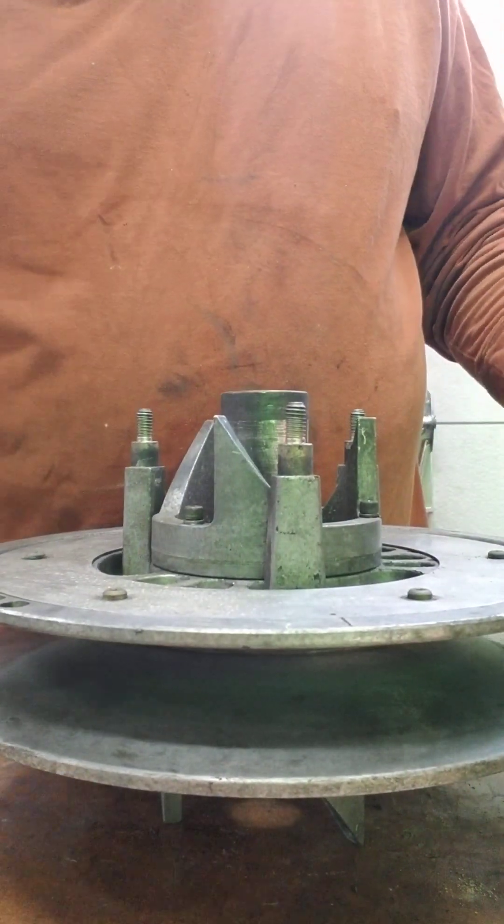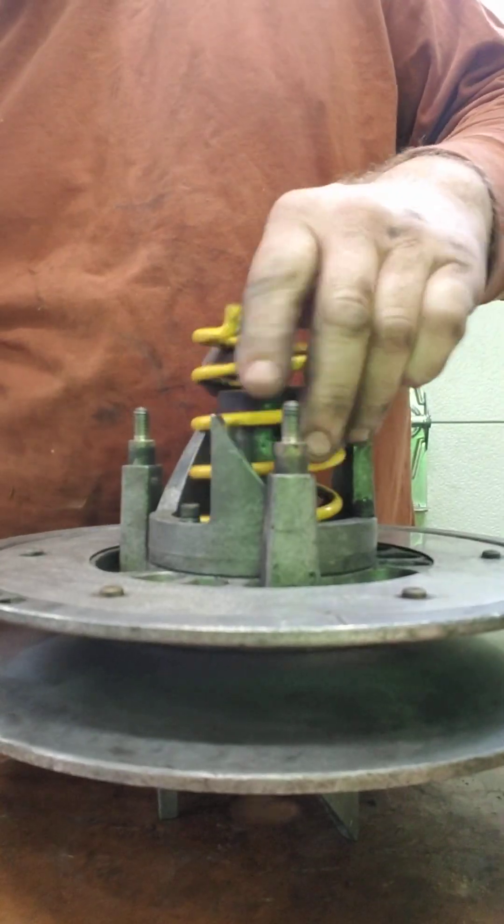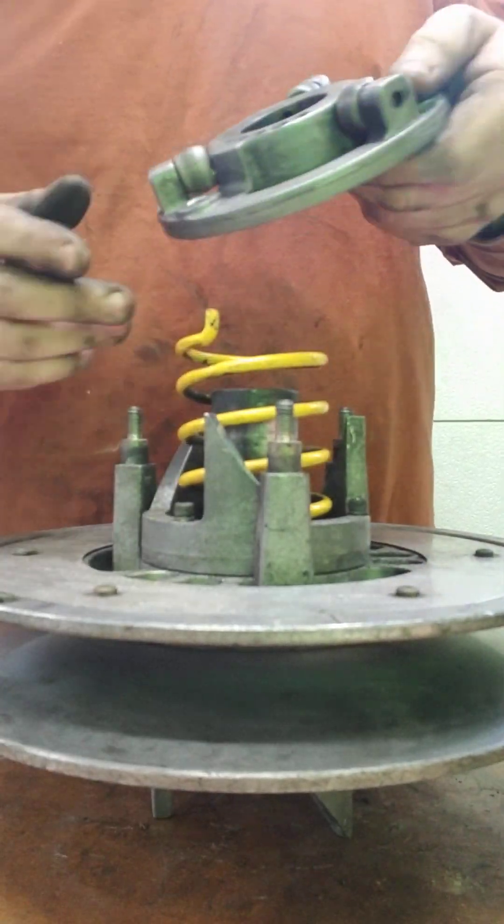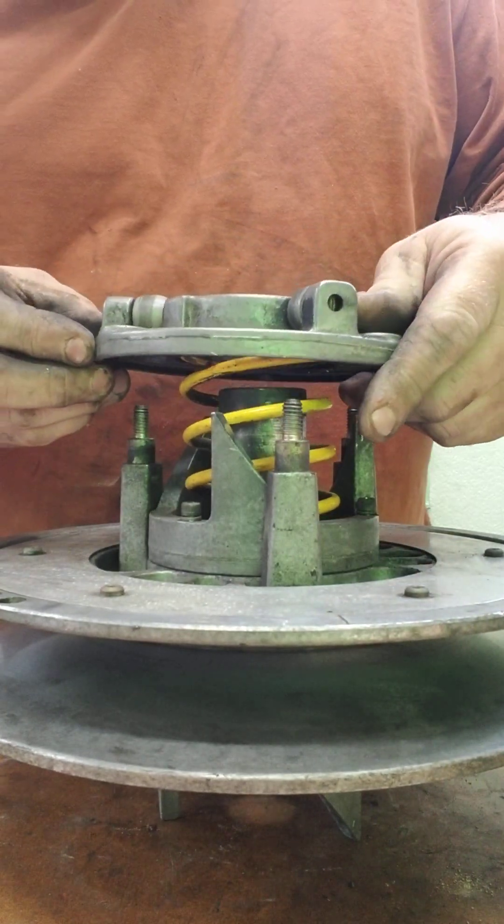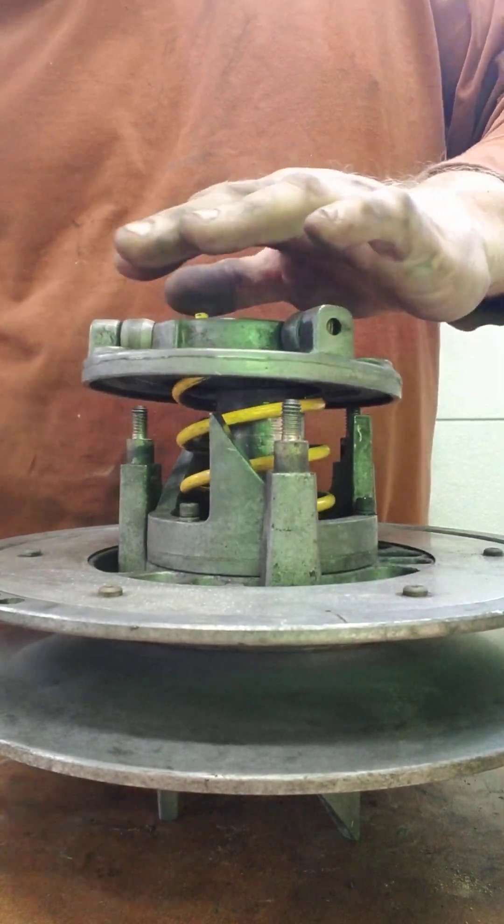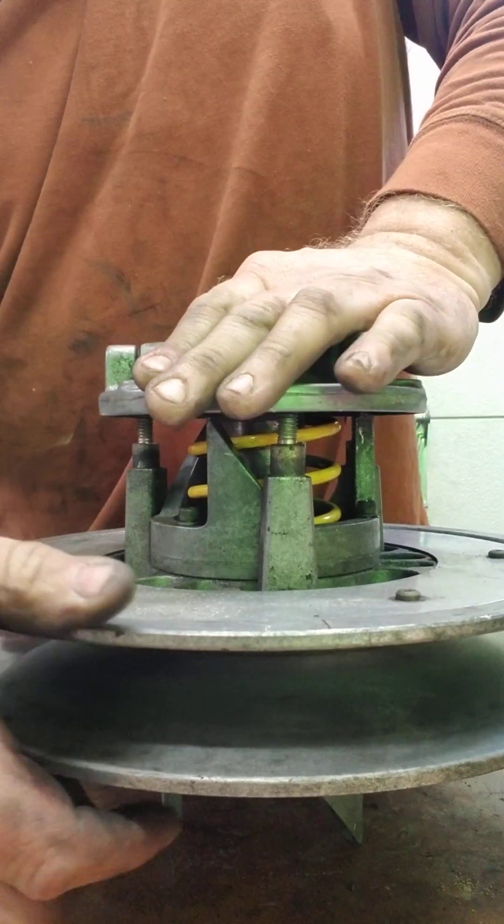And you put your clutch cover, your clutch spring back in there. Normally most stock settings is a center hole, so you put it in the center hole, then you rotate this a quarter turn.